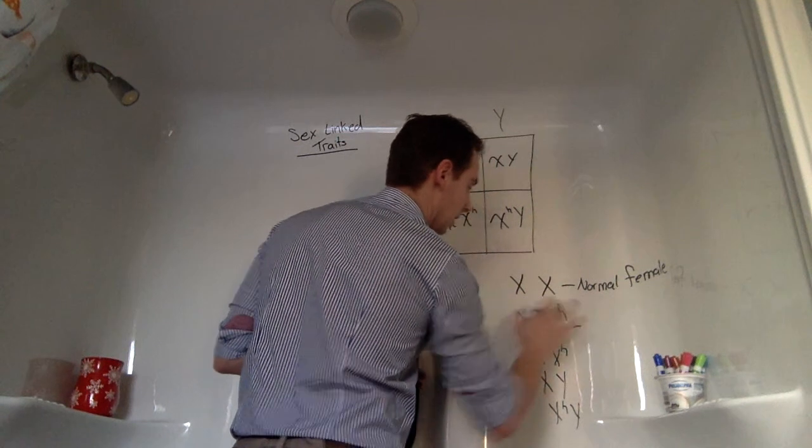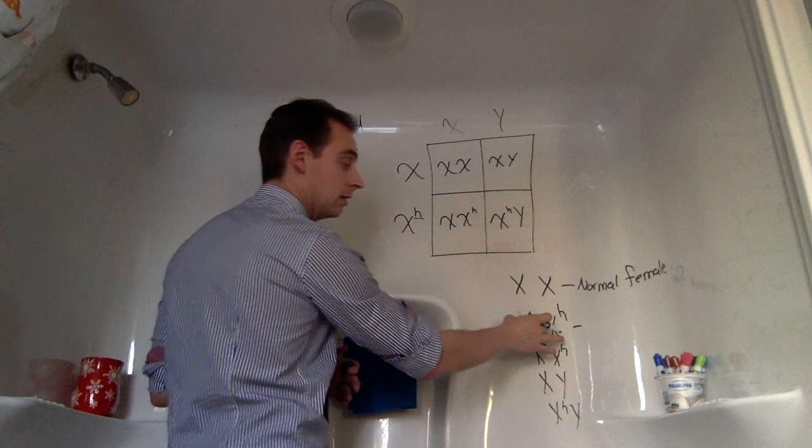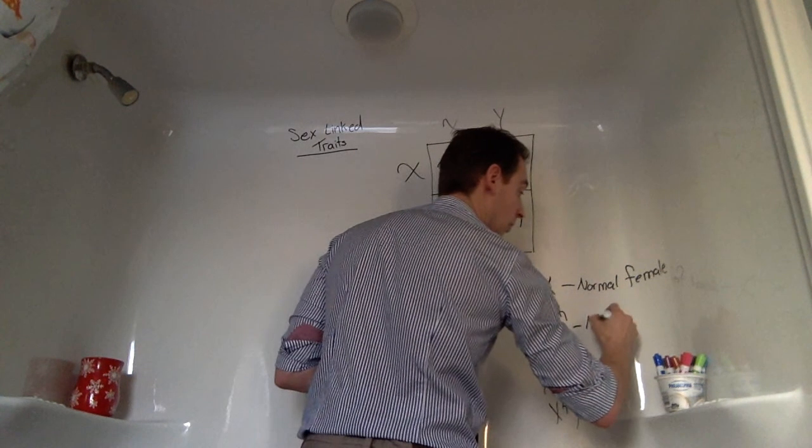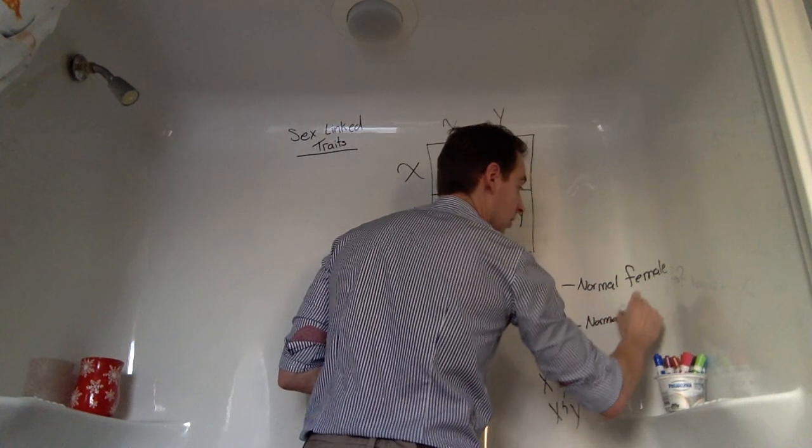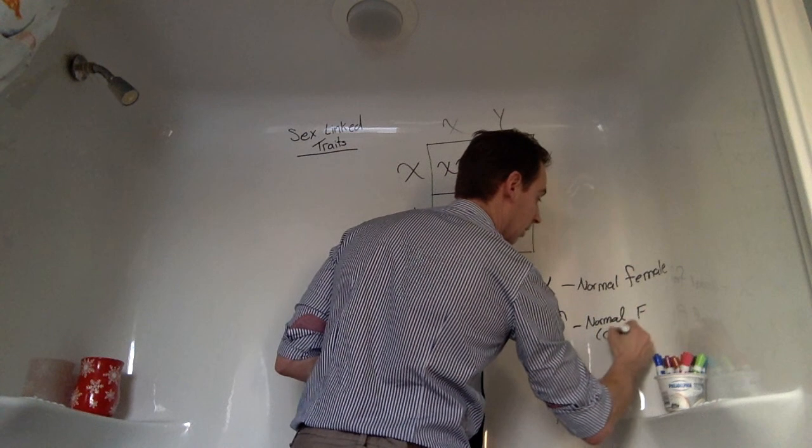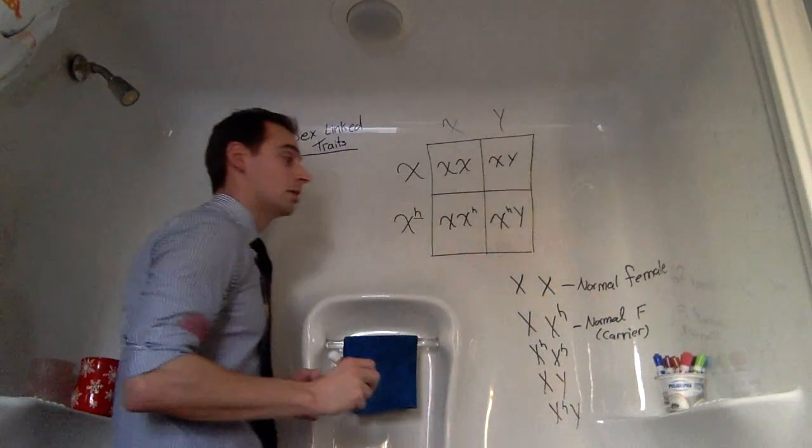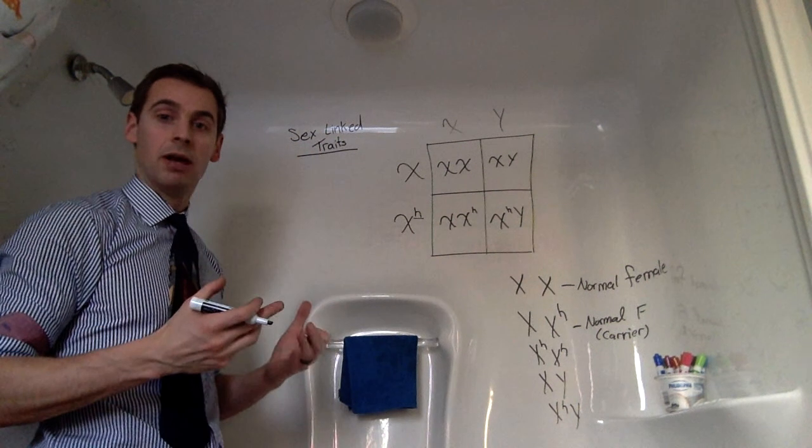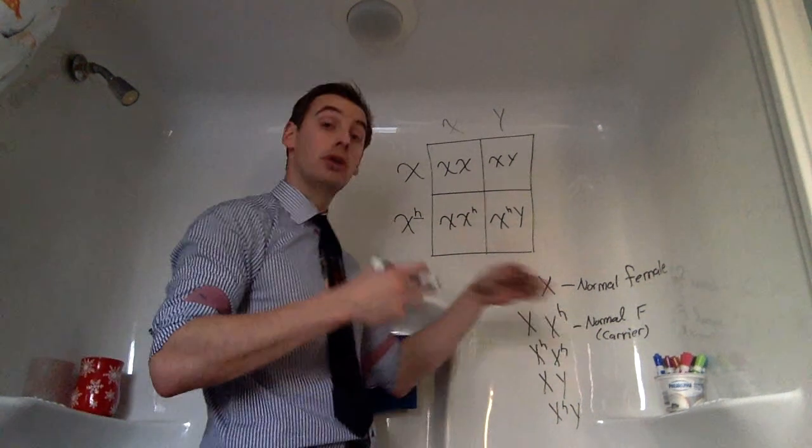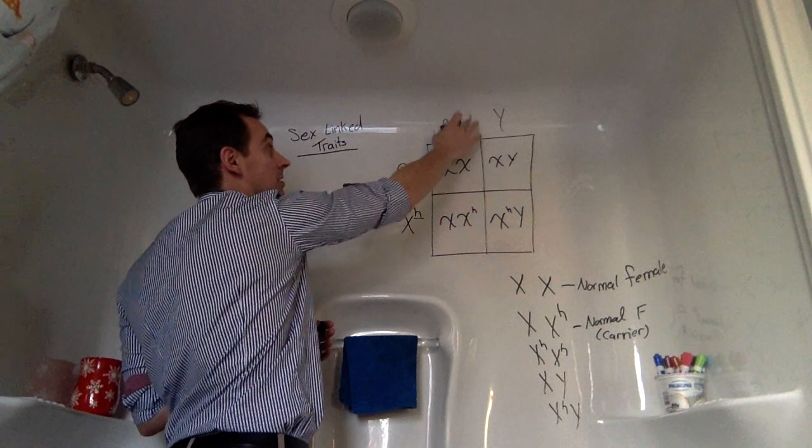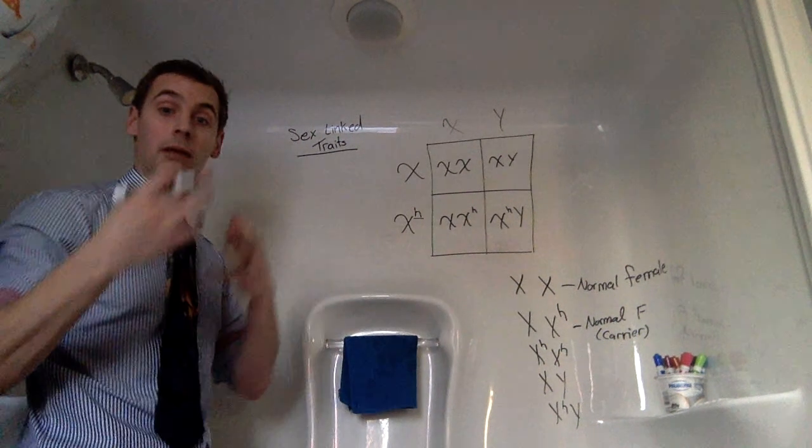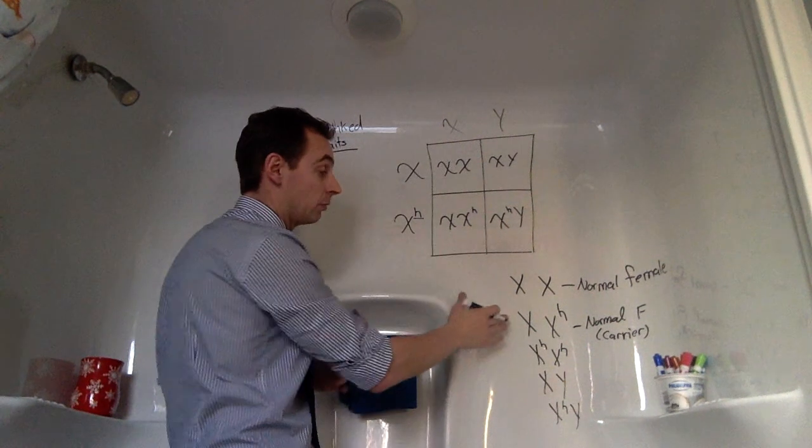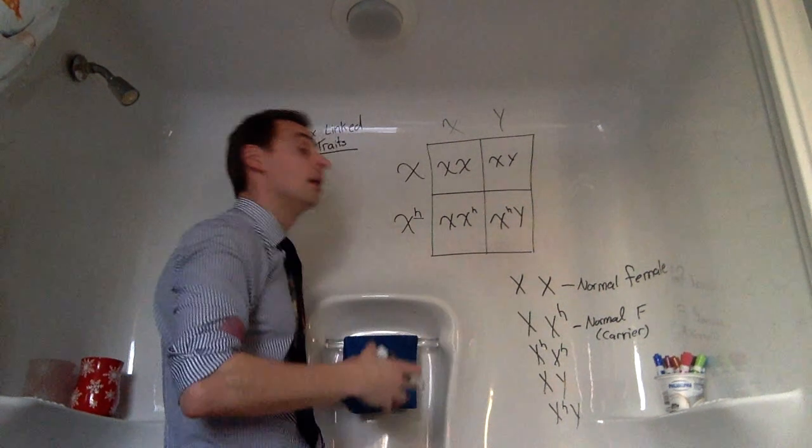The next example is XX with a superscripted h, which means we have normal female, but they are a carrier. So they're a carrier, which means they have the trait. It's not noticeable because it's recessive, but they have the trait that could potentially pass over. But in this case, you don't have to worry about that because they are only a carrier. They are still normal.